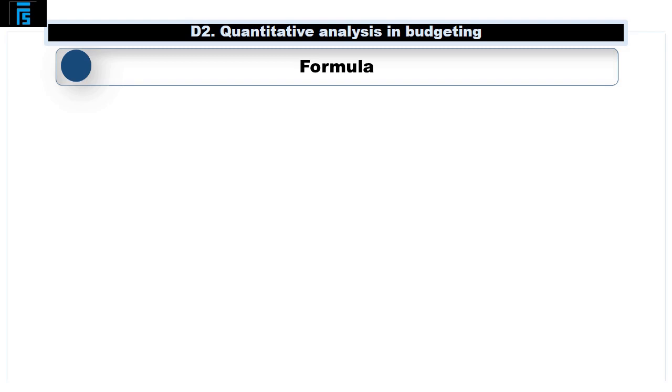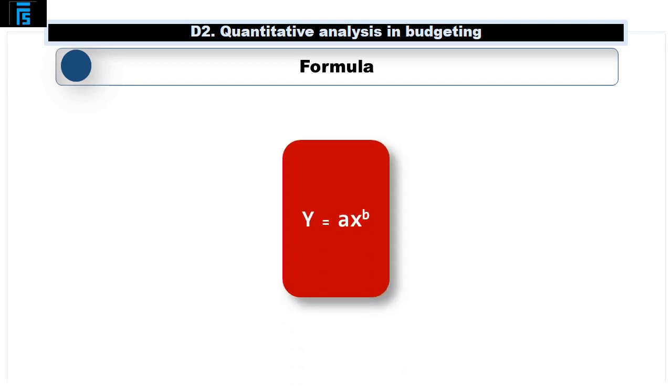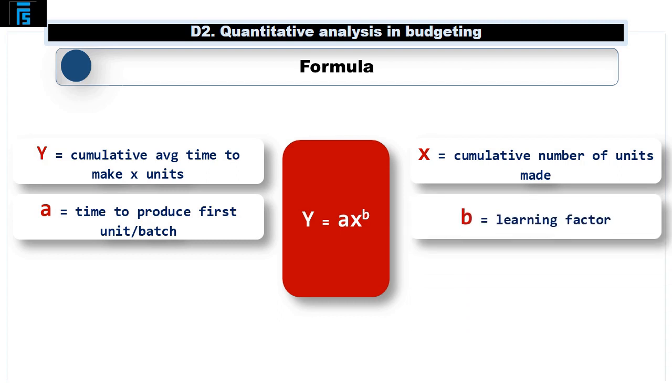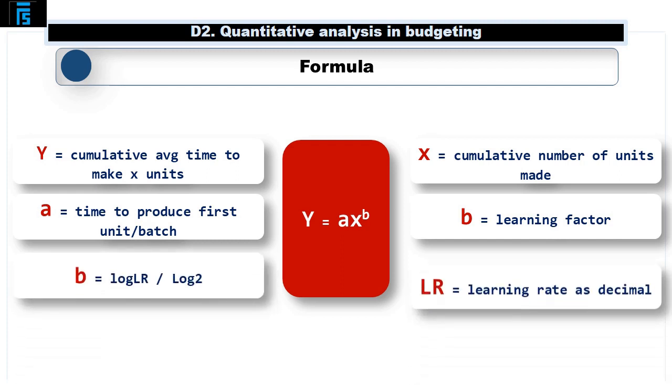The formula we are going to use is Y = ax^b, where Y is the cumulative average time taken to make x units, x is the cumulative number of units made, a is the time taken to produce the first unit or batch, and b is the learning factor, calculated as log(LR) / log(2). LR is the learning rate as a decimal, so if the learning rate is 80%, LR would be 0.8. The log button can be found on your scientific calculator. Please take some time now to ensure you know where the button is. If necessary, pause this video so that you have time to find the button.